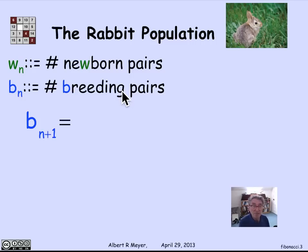That means that all the breeding pairs that we used to have, we still have. So one component of Bn plus 1 is Bn. In addition, all of the newborn pairs that we had last month have become breeding pairs this month. So we can add Wn to Bn. And that's how many breeding pairs we have at month n plus 1.